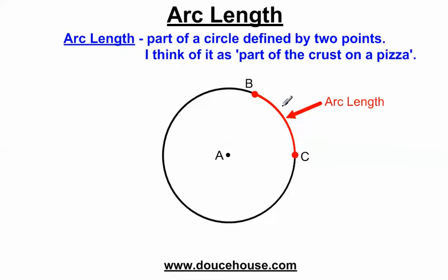What if I want to find the distance between those points? Well, that's what we mean by arc length. Whenever we want to find part of the distance around a circle, we refer to it as arc length. I often think of this as pizza — let's say I had a slice of pizza, and it went from A to B and A to C, and I was just trying to measure the distance of the crust.